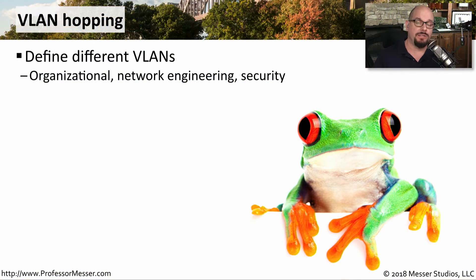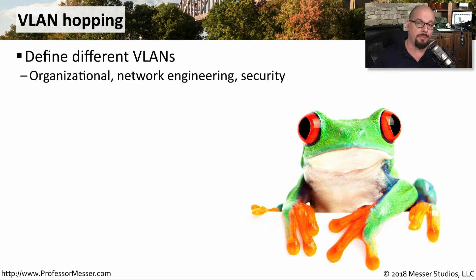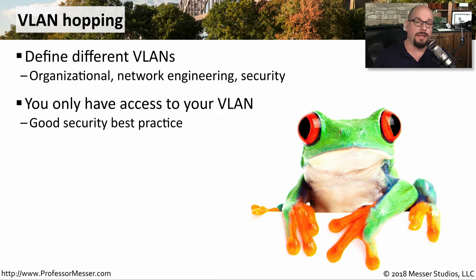Many organizations use VLANs to separate the network into different parts, for organizational and security reasons. You might have a VLAN for the network engineering team, a VLAN for shipping and receiving, and a separate VLAN for the accounting department. If someone in the accounting department is accessing the network, they have access to all devices on the accounting VLAN. Best practice is that you would only have access to devices on your local VLAN.